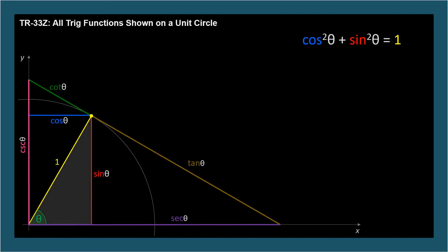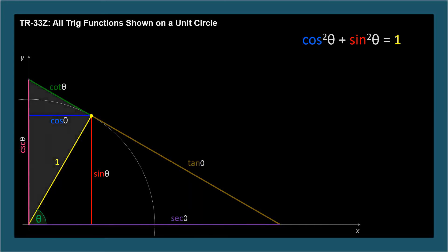But there are lots of right triangles on this diagram. Let's take a look at this one. It corresponds to the second Pythagorean identity. 1 plus cotangent squared theta equals cosecant squared theta.